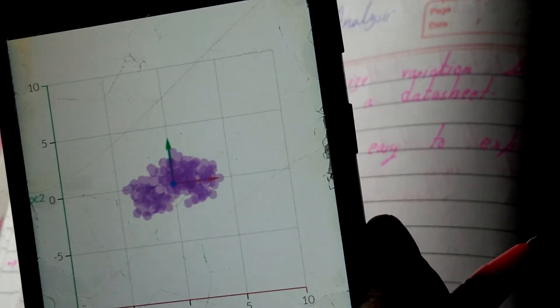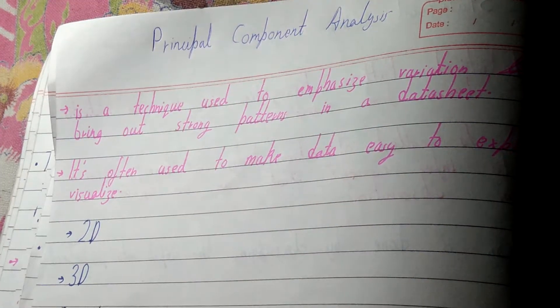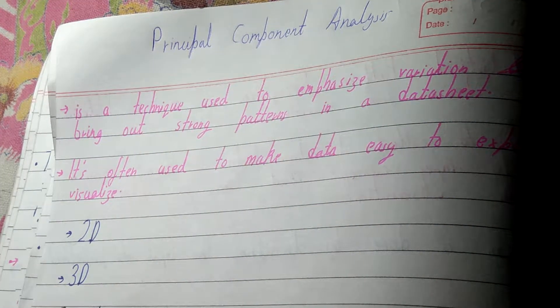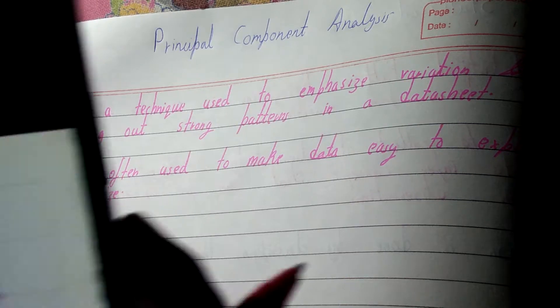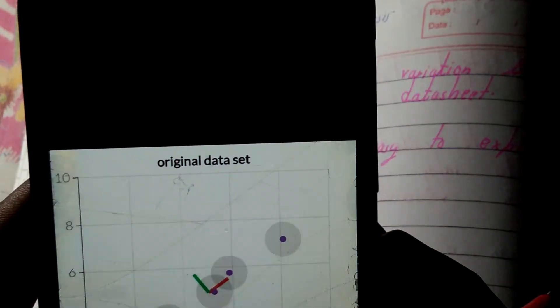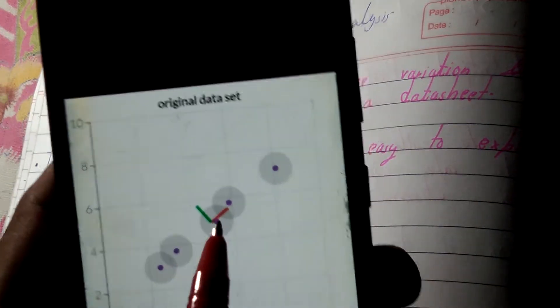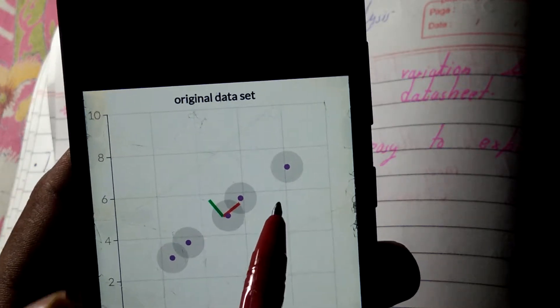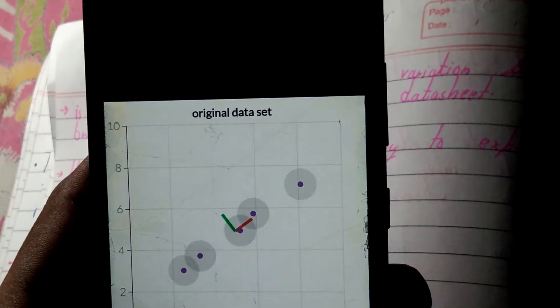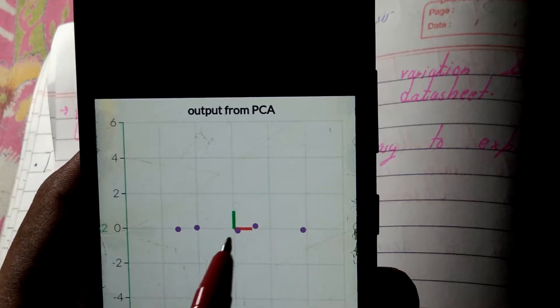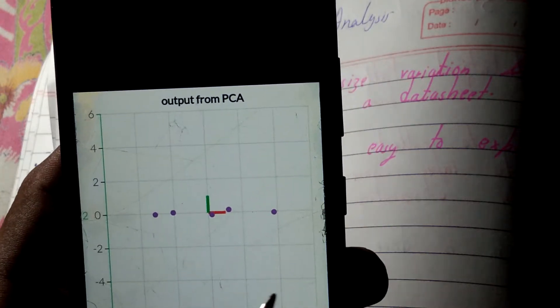So that's why it is so much preferred in principal component analysis. Now if you want to write an example, you can just draw this diagram. You have to show that the orientation of it is in multi-dimensional scales. With the help of principal component analysis, it is just made one-directional so that it can be easily accessed and easily explored.